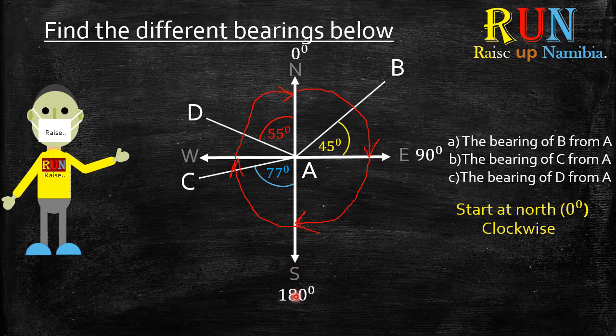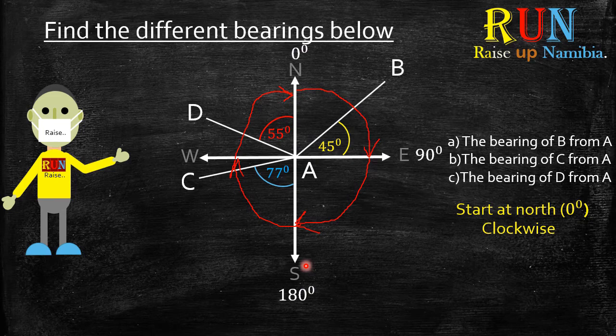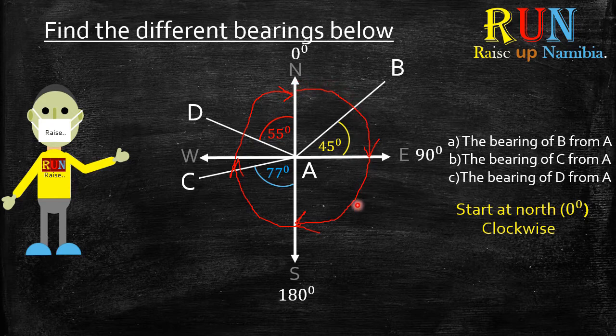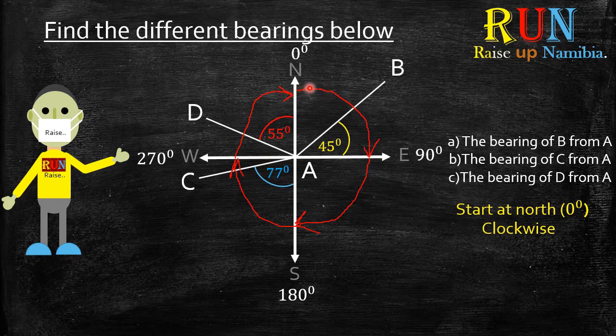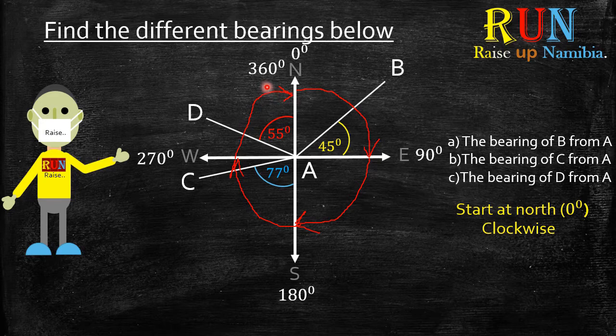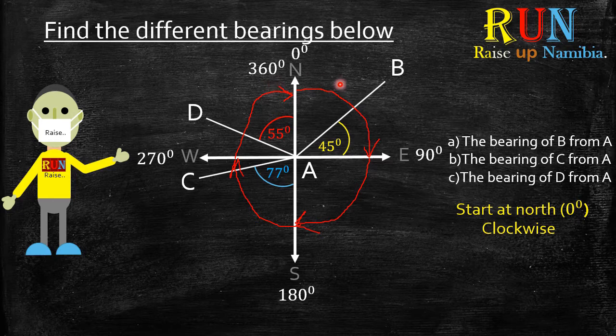Now when you start at the north again and you go until up here at the north behind, which will give you a 360 degree which is a revolution. Now with these properties out of the way, let's quickly look at the examples.